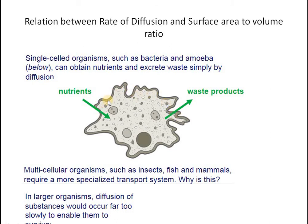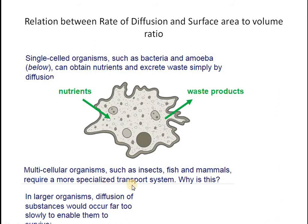That is why a single-celled organism can survive only on diffusion for intake of nutrients and excretion of waste products. On the other hand, a multicellular organism cannot survive only on diffusion because the diffusion rate in a larger, complex organism is so slow that it cannot enable survival. So what we learn here is that the larger the surface area to volume ratio, the quicker and more efficient the rate of diffusion.